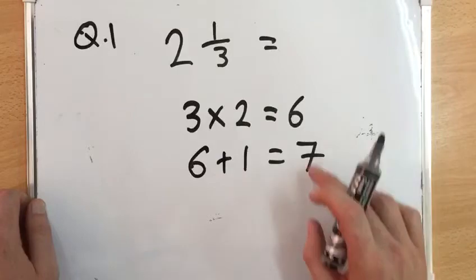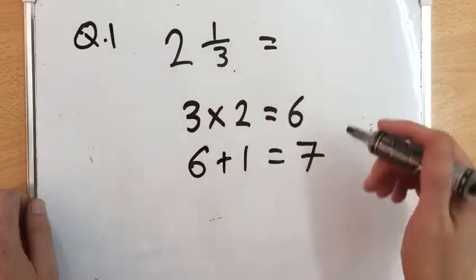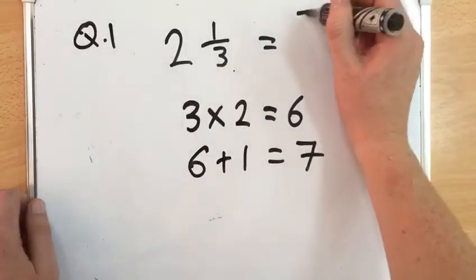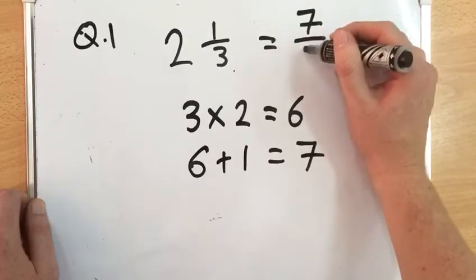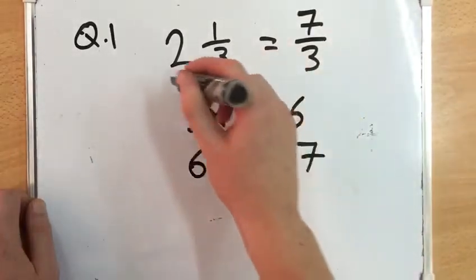We then take this answer, 7, and put it over our denominator. So that becomes 7/3. Therefore, 2 and 1/3 equals 7/3.